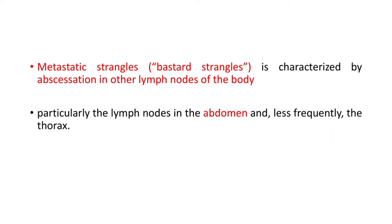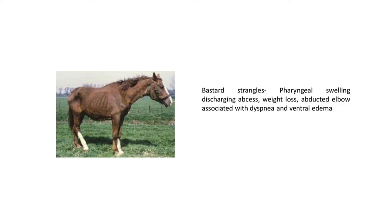There is a condition called metastatic strangles, or bastard strangles, characterized by abscessation of lymph nodes other than the submandibular — particularly the lymph nodes in the abdomen and, less frequently, the thorax. Here you can see a picture of a horse with metastatic or bastard strangles showing pharyngeal swelling, discharging abscesses, weight loss, abducted elbow associated with dyspnea, and ventral edema.